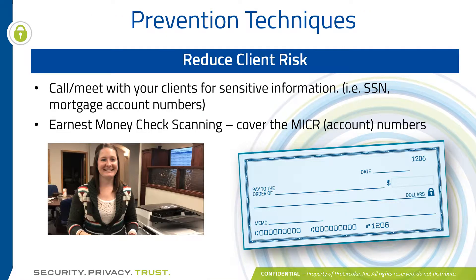So reducing your client risk. At some point you will need to get social security numbers, mortgage numbers, and other things like that from your clients. Always encourage them to call you with that information. You'll also need to make copies of earnest money checks. We want to make sure that you cover the micro numbers before you make those copies. Here is a short demonstration video.